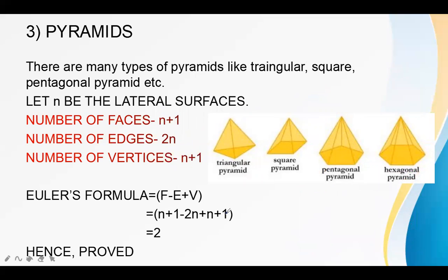There are many types of pyramids: triangular pyramid, square pyramid, pentagonal pyramid, and hexagonal pyramid. Let N be the number of edges of the base. The number of faces is N plus 1, the number of edges is 2N, and the number of vertices is N plus 1. Putting these into Euler's formula gives N plus 1 minus 2N plus N plus 1, which simplifies to 2. Hence, all kinds of pyramids are also polyhedrons.